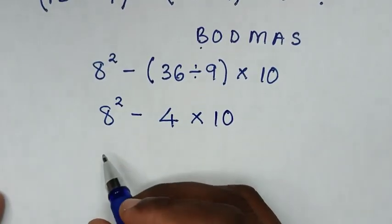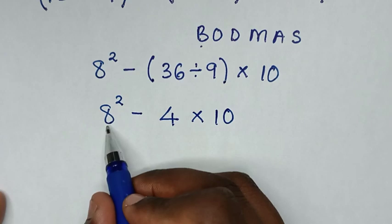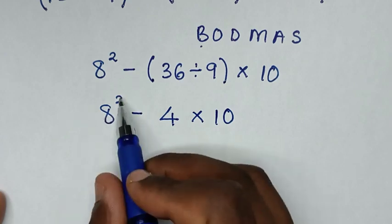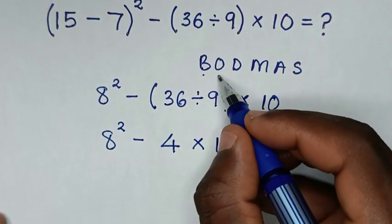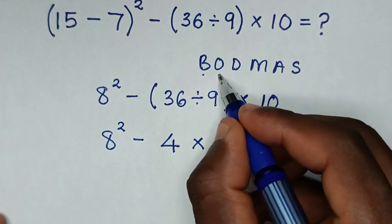So in here we have 8 squared. 8 squared, this is order. So we're going to deal with order first.